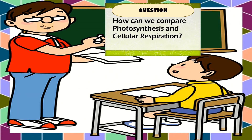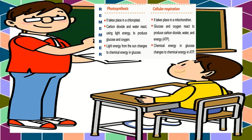How can we compare photosynthesis and cellular respiration? Photosynthesis takes place in chloroplast, while cellular respiration takes place in mitochondria. In photosynthesis, carbon dioxide and water react using light energy to produce glucose and oxygen, while in cellular respiration, glucose and oxygen react to produce carbon dioxide, water, and energy in the form of ATP. In photosynthesis, the light energy from the sun changes to chemical energy in glucose, while in cellular respiration, chemical energy in glucose changes to chemical energy in ATP.